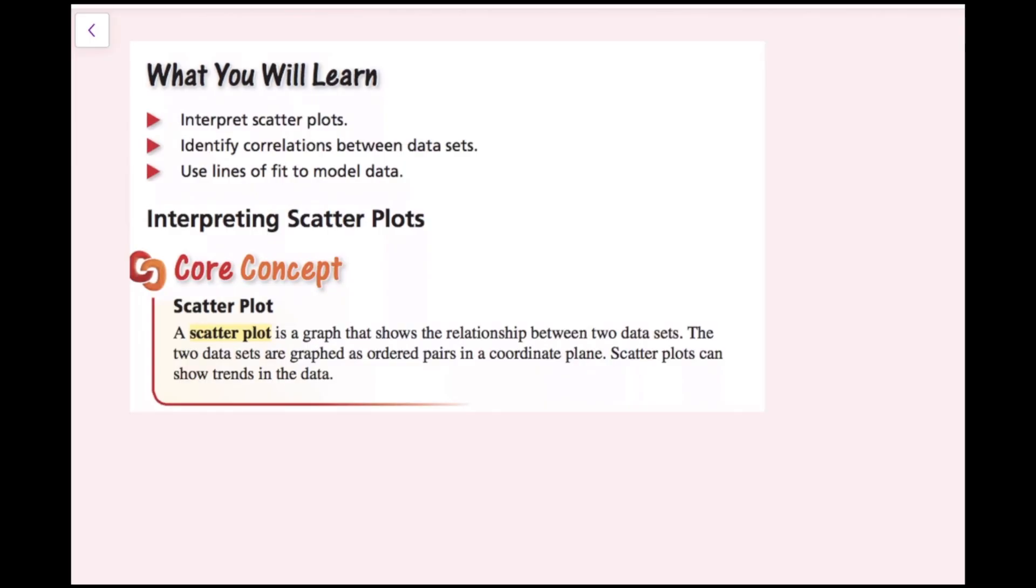A scatter plot is a graph that shows the relationship between two data sets. The two data sets are graphed as ordered pairs in a coordinate plane. Scatter plots can show trends in the data.